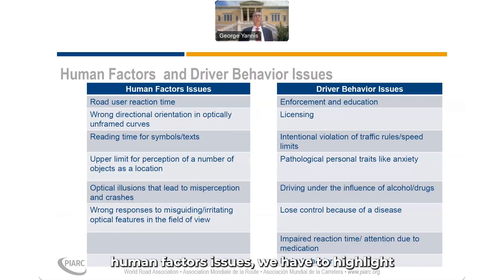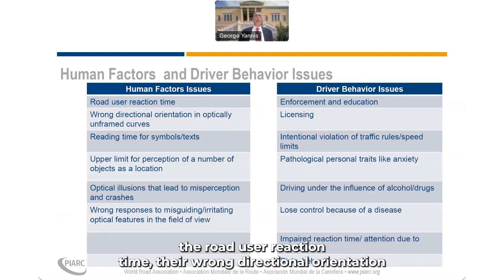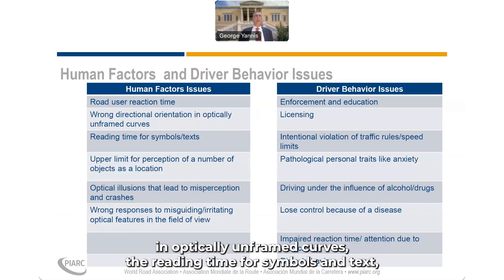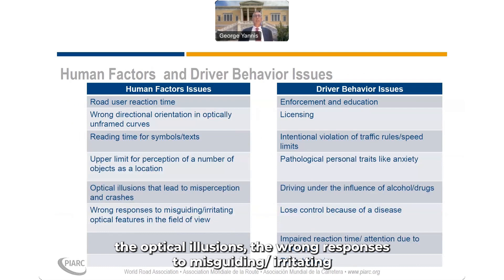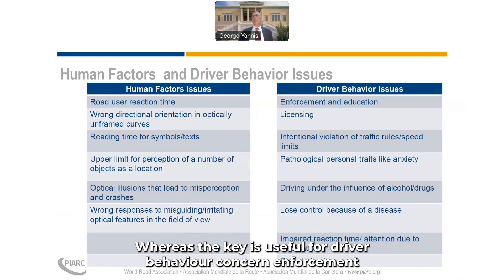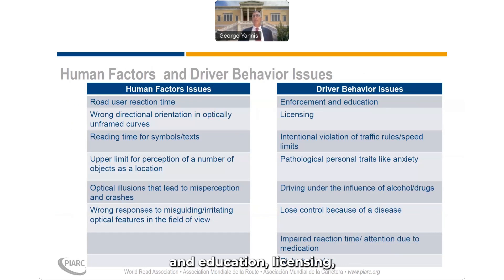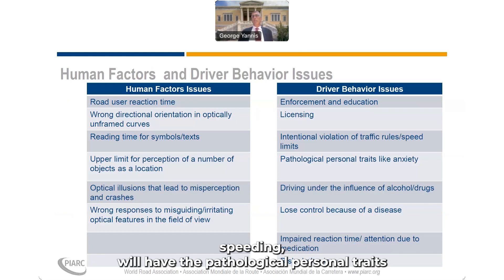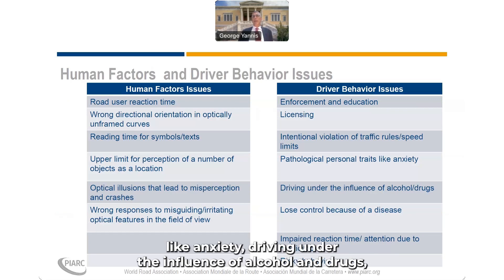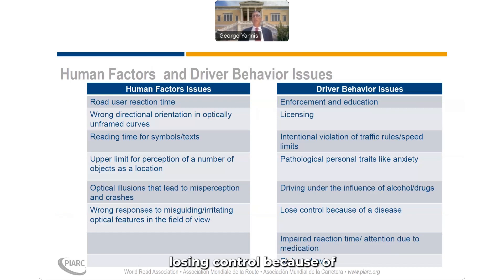Getting into the key human factor issues, we have to highlight road user reaction time, wrong directional orientation in optically unframed curves, reading time for symbols and text, the upper limit for perception of objects at a location, optical illusions, wrong responses to misleading and irritating optical features. The key issues of driver behavior also concern enforcement and education, licensing, intentional violation of traffic rules, speeding, pathological personal traits like anxiety, driving under the influence of alcohol and drugs, losing control because of disease and medication, fatigue, and overall risky behavior.